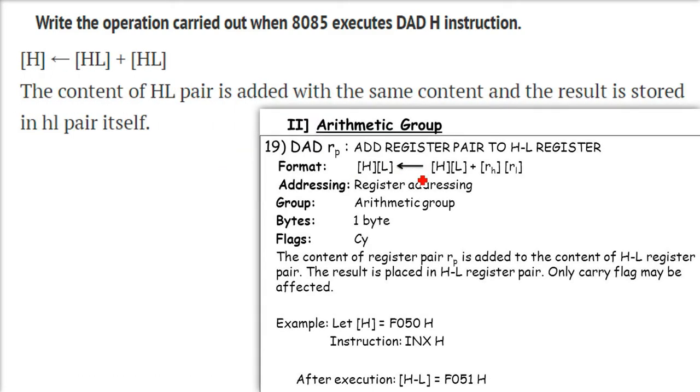So the main DAD is adding the register pair to the HL register. As I discussed, we have the register pair BC, DE, HL like this. So here, the content of the HL pair will be added to the same content and the result is stored in HL.